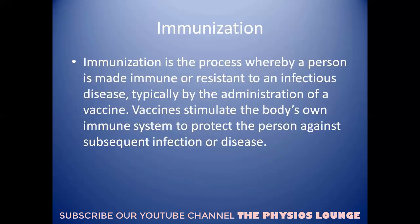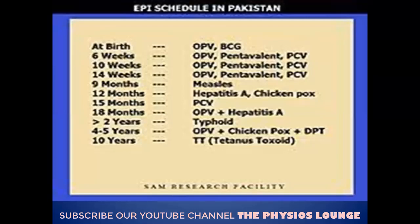What is Immunization? When you are working with a patient, you need to administer a vaccine. Vaccines are introduced to the body to stimulate the immune system so that, without any infectious disease or virus exposure, the body is protected. At the time of birth, two vaccines are given: OPV and BCG. BCG is given as an injection.